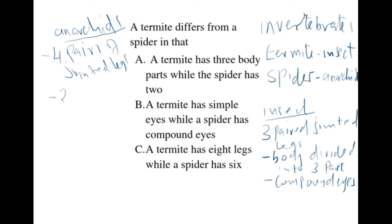Arachnids have their body divided into two parts. Therefore, looking at the answers, we can easily identify the difference between a termite and a spider. A termite has three body parts while the spider has two body parts. A termite, being an insect, has three pairs of jointed legs. For the spider, which is an arachnid, it has two body parts. So the correct statement is A.